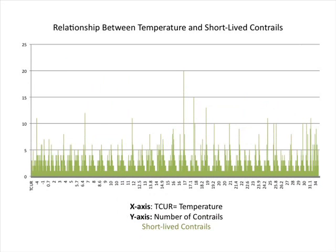The relationship between temperature and short-lived contrails shows the x-axis as current temperature and the y-axis as number of contrails. The same pattern is apparent here: most contrails were formed in the 16 to 21 degrees Celsius range. The short-lived and spreading contrails have a very similar graphic appearance. All of these graphs display a wave-like pattern with multiple troughs and crests, which could be a relationship that needs further investigating.